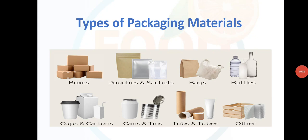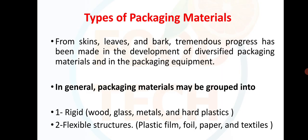In this video we are going to discuss types of packaging materials. From skins, leaves and bark, tremendous progress has been made in the development of diversified packaging materials and in packaging equipment. In general, packaging materials may be grouped into rigid — for example wood, glass, metals and hard plastics — and flexible structures such as plastic film, foil, paper and textiles.